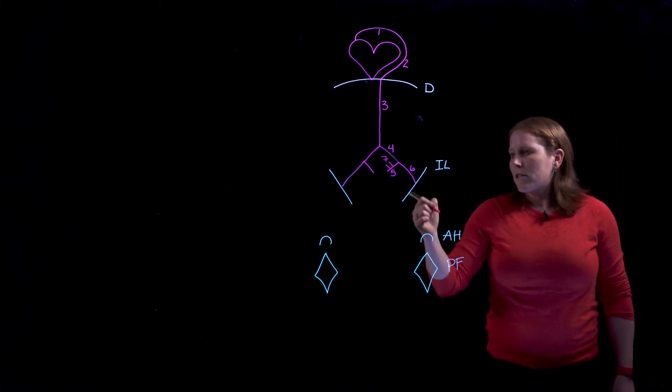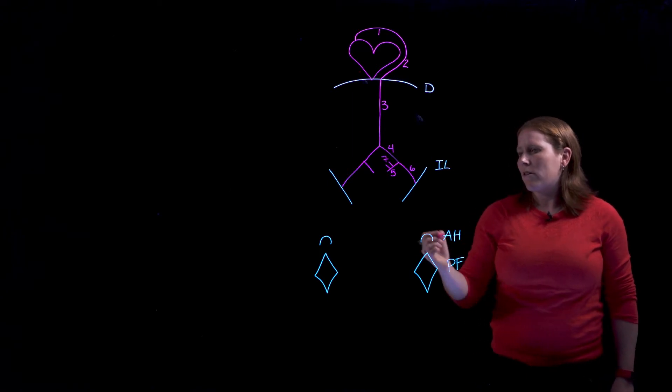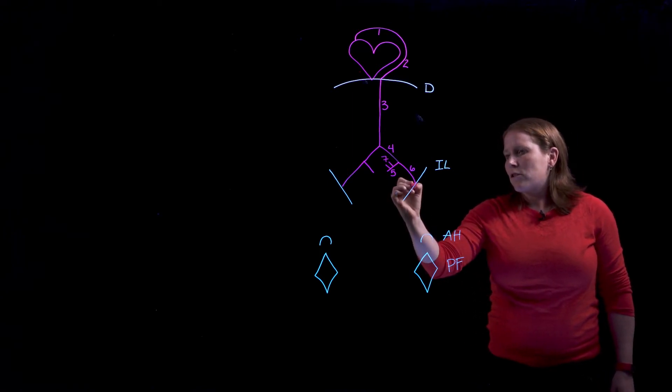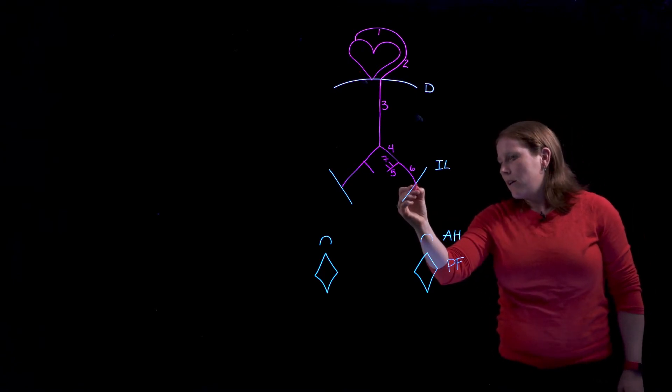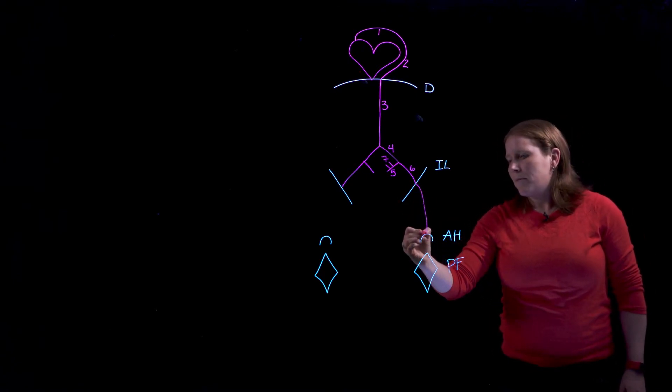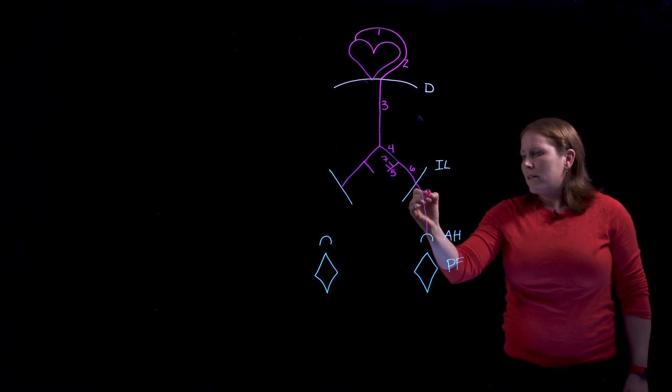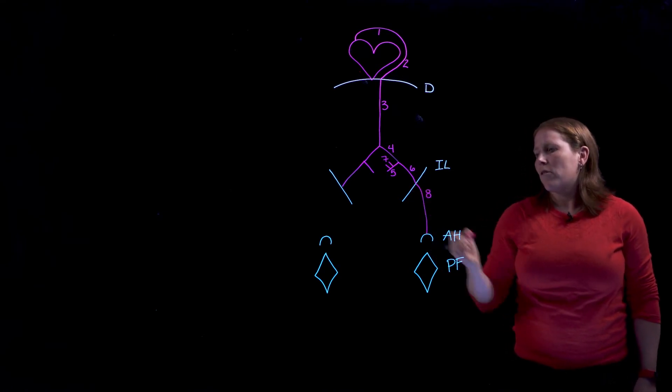If you return your attention to number six the external iliac artery, this artery will eventually pass deep to the inguinal ligament and when it does that it's going to be renamed. And this is now going to be the femoral artery.